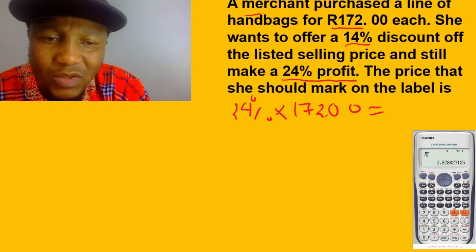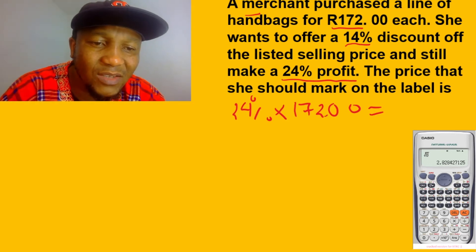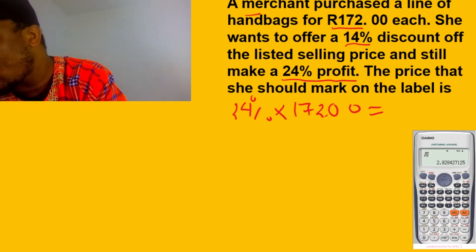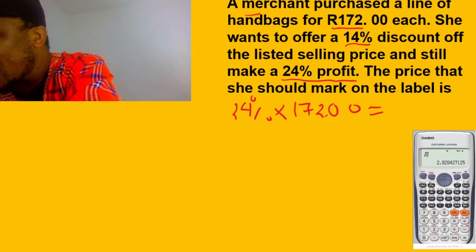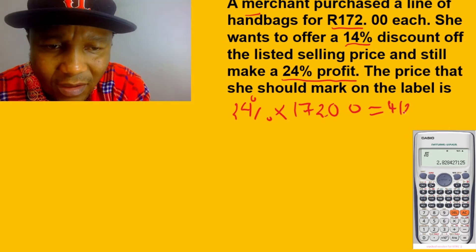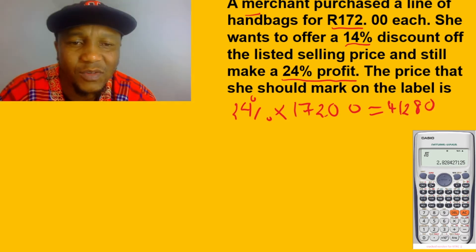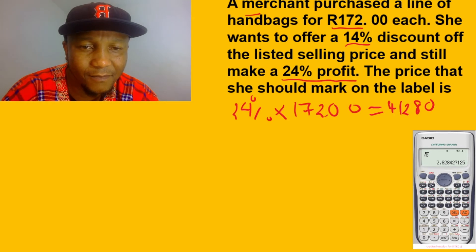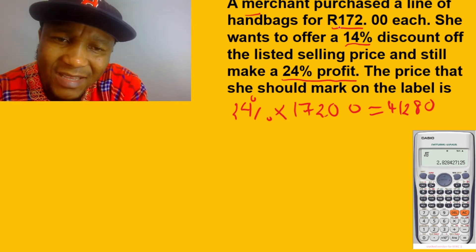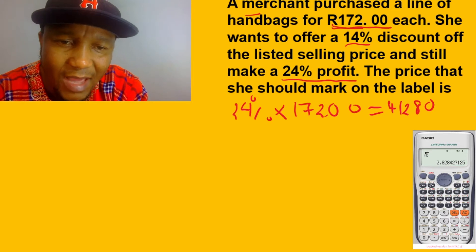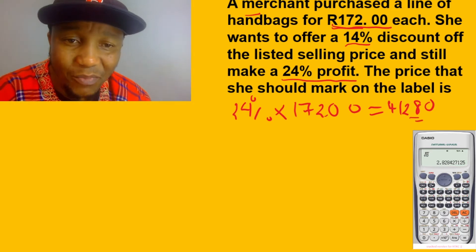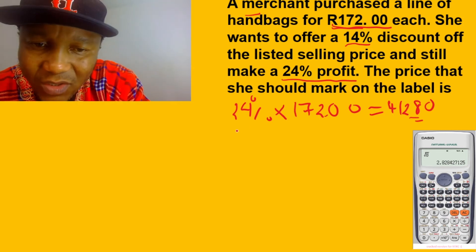If you plug that into the calculator, it gives us 41.28. So that's the profit. Now, if I'm buying this for 172 and I want to add the profit, let me add them together so I can find the selling price. So I'm going to say 172 plus 41.28.